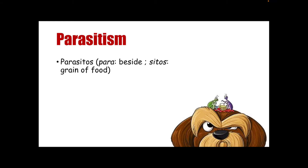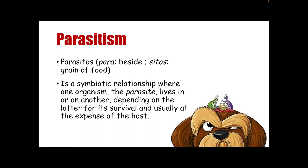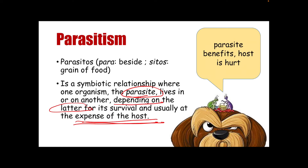Last and very important, we have parasitism. This will be the main point of the entire discussion. Parasitus comes from the word 'para' meaning beside and 'situs' meaning grain of food. It is a symbiotic relationship where one organism, the parasite, lives in or on another, depending on the latter for its survival and usually at the expense of the host. This means the parasite benefits and the host is being harmed. One example of a pathogenic amoeba is Entamoeba histolytica.